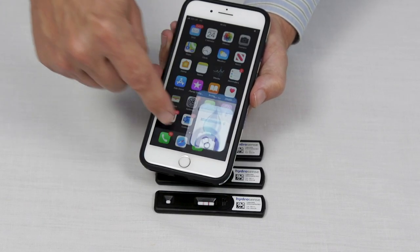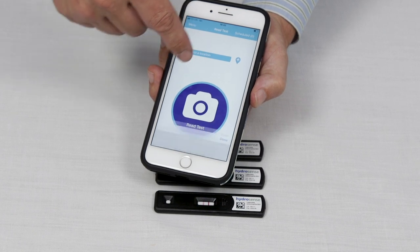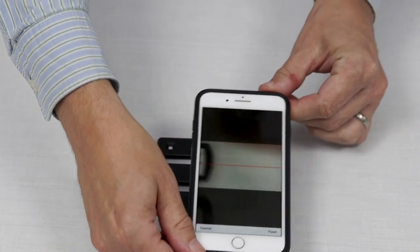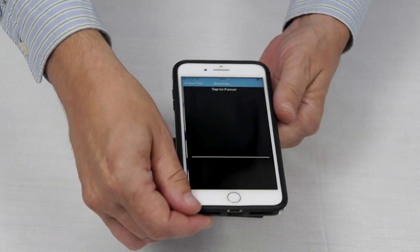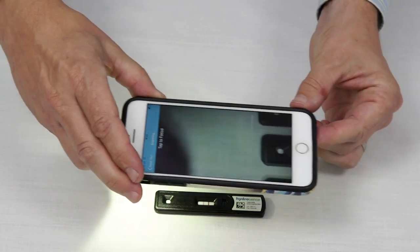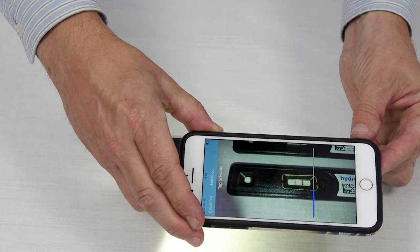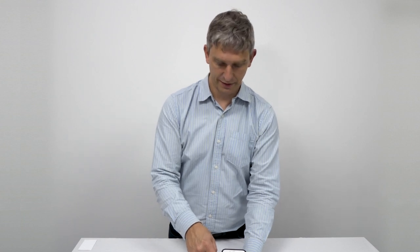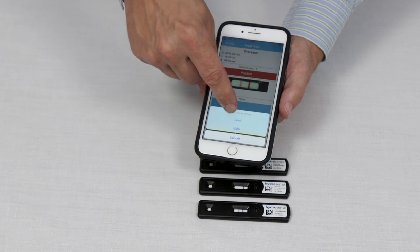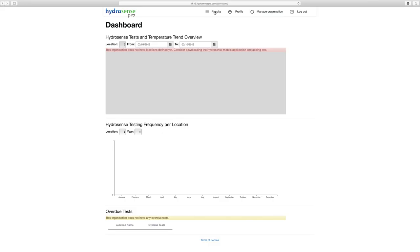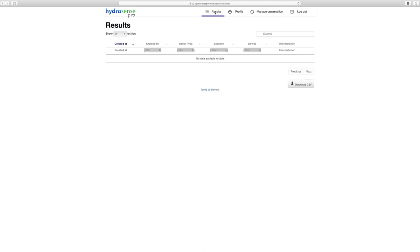To use the app launch the app, select a pre-programmed location and click read test. Scan the barcode and then read the test by matching up the image on the screen with the cassette. The positive result indicates that Legionella pneumophila serogroup 1 has been detected in the sample. Results can be shared via email or SMS or results are also automatically uploaded to the HydroSense Pro portal at hydrosensepro.com.